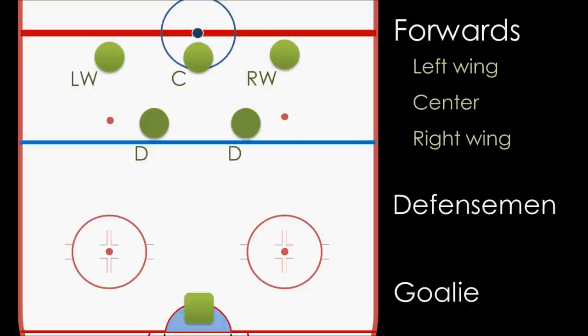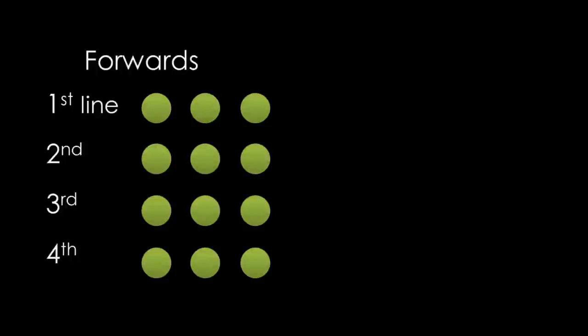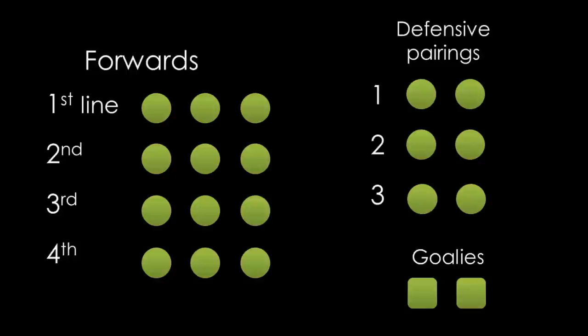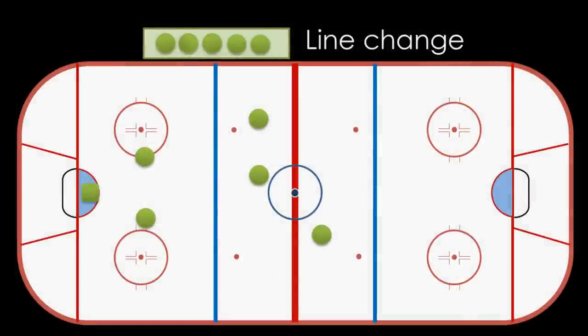To avoid confusion, teams have what are called lines. There will be 4 groups or 4 lines of 3 forwards each, with each line having a left wing, a center, and a right wing. These lines are numbered 1 through 4, with the first line featuring the best players and the fourth line featuring the guys who aren't quite as good. Each team will also have 3 pairs of defensemen. Players can be moved from one line to the next and often are even within the same game, but guys are usually kept together because the more you play together, the better they get to know each other.